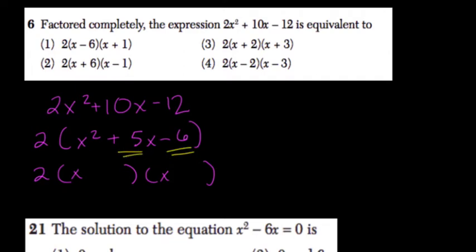So for example, I know that negative 6 times 1 is negative 6. And if I add the two, I get negative 5. So if I switch that, if I have plus 6 times negative 1, that would multiply by negative 6 but add to 5.